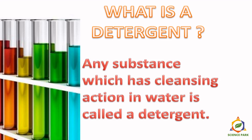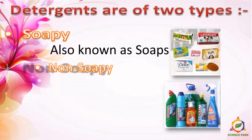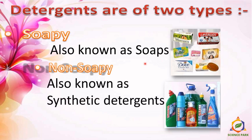Any substance which has a cleaning action in water is called a detergent. There are two types of detergents: soapy and non-soapy. Soapy detergents are mostly known as soaps, and non-soapy detergents are known as synthetic detergents.